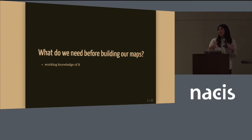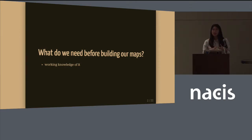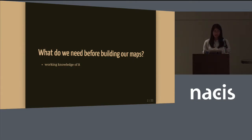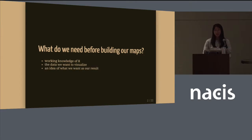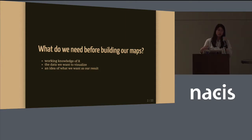Before we start looking at how to build maps in R, I'm assuming that you have just a working knowledge of R. A lot of the code snippets I will show are mostly procedural and less about syntax. You'll also need some data you want to visualize and an idea of what you want as your result — it doesn't have to be perfect, because there are features within R that let you quickly layer on new features as you go along, and if you decide you want to change your output you totally can within one line.